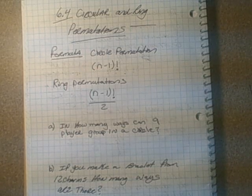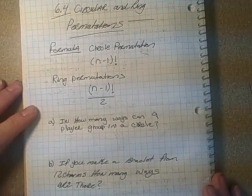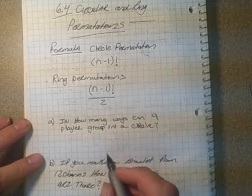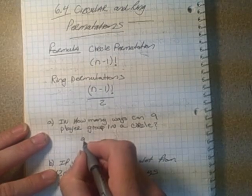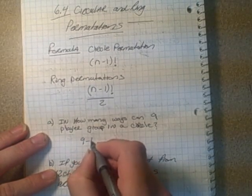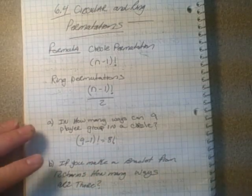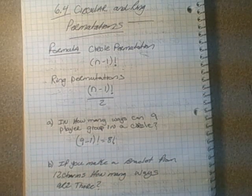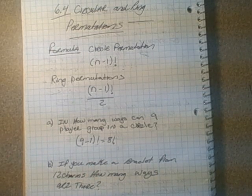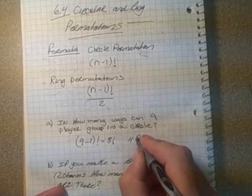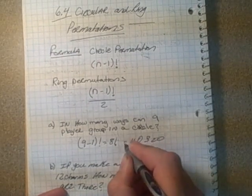How many ways can 9 players form a circle or group in a circle? That's just using a circle permutation of (9-1)! or 8!. That's 8 times 7 times 6 and so forth. I'll plug that in: 40,320.